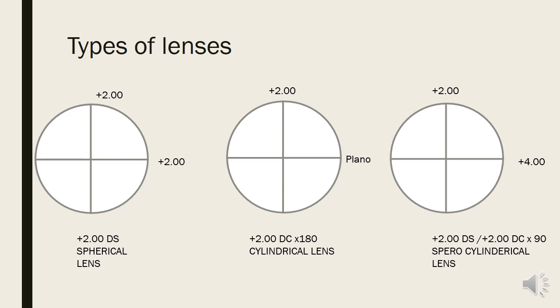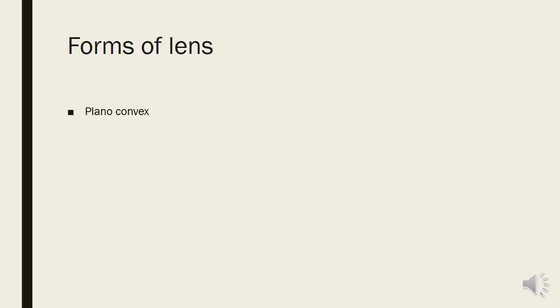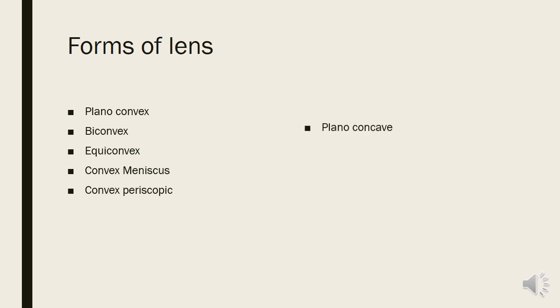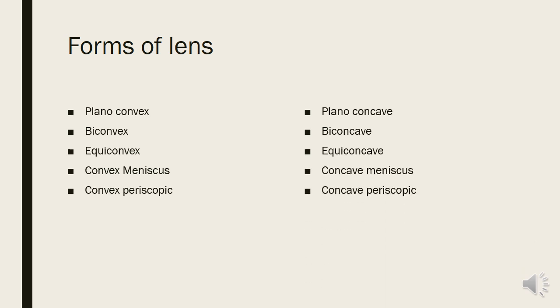Now we move to the forms of lenses. Forms of lenses refer to how a particular power is created — specifically how the power is distributed across the two surfaces. For a given total power, the distribution can vary, and based on the surface profile the lens is given a particular name. For convex lenses the forms are: plano-convex, bi-convex, equi-convex, convex meniscus, and convex periscopic. For concave lenses: plano-concave, bi-concave, equi-concave, concave meniscus, and concave periscopic.